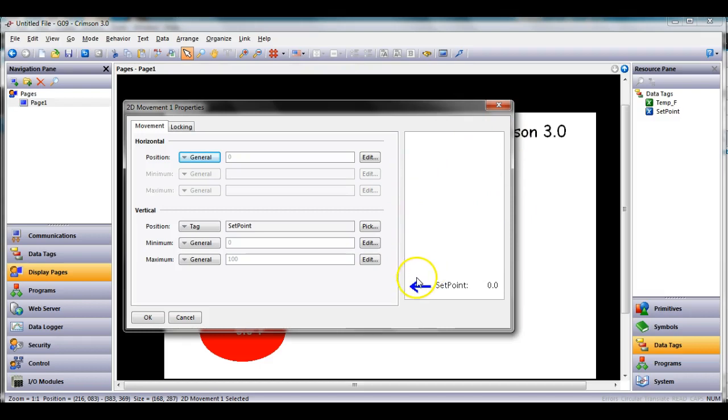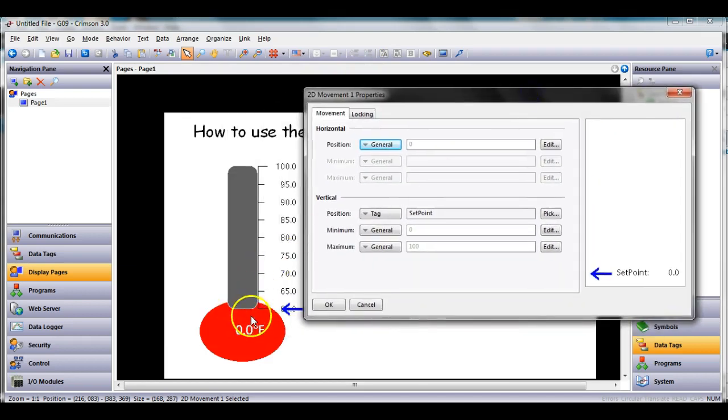However, when Redline designed this particular primitive operation, they set up the minimum to be the top and the maximum to be the bottom. That is totally opposite of my thermometer because I have the minimum down below and the maximum above.